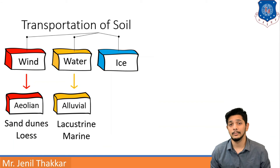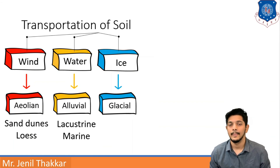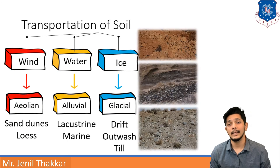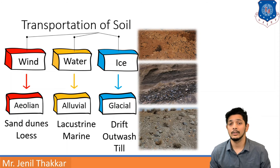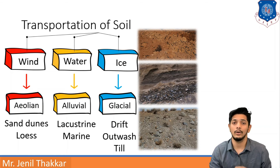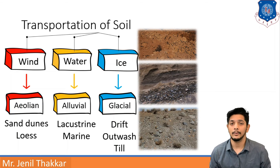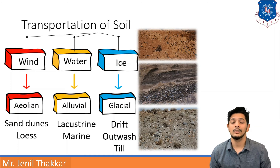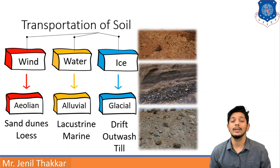If the transportation medium is ice, the soil type is known as glacial soil. Examples include drift, outwash, and till. In the top picture there is drift — small particles coming from the drift of ice after freezing and thawing. In the middle picture is outwash from icy surfaces, and the bottom image shows till.